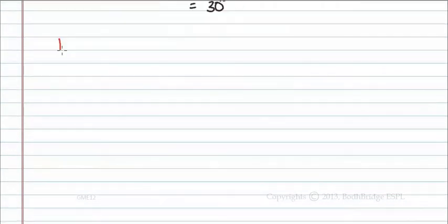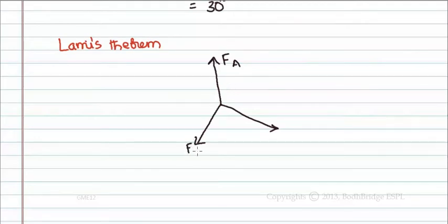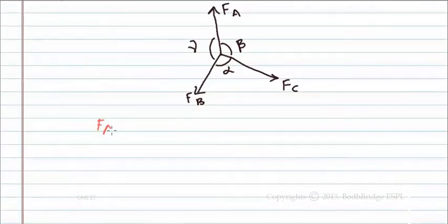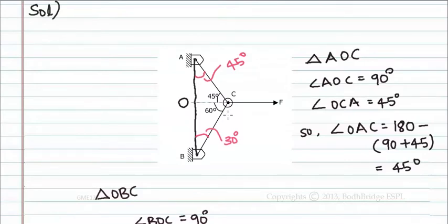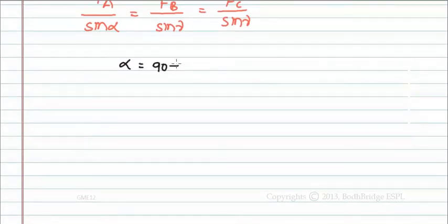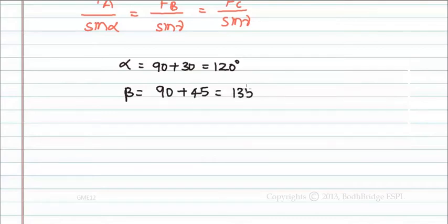We know Lamy's theorem: when three forces FA, FB, and FC are acting at a point with angles alpha, beta, and gamma respectively, then FA/sin(alpha) = FB/sin(beta) = FC/sin(gamma). Applying this to the problem: alpha is equal to 90 + 30 = 120 degrees, beta is equal to 90 + 45 = 135 degrees, and gamma is equal to 60 + 45 = 105 degrees.